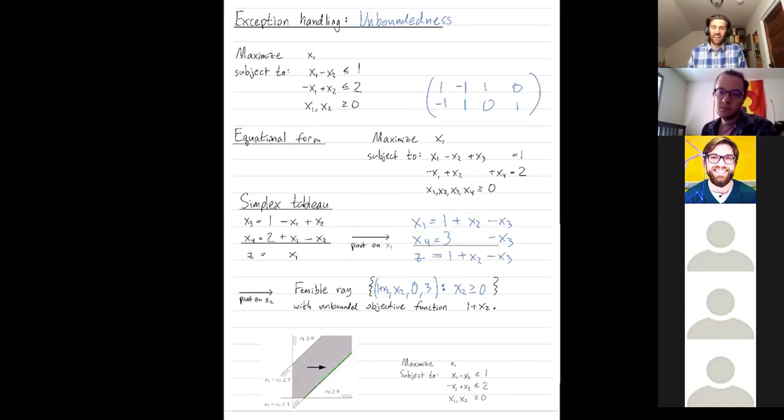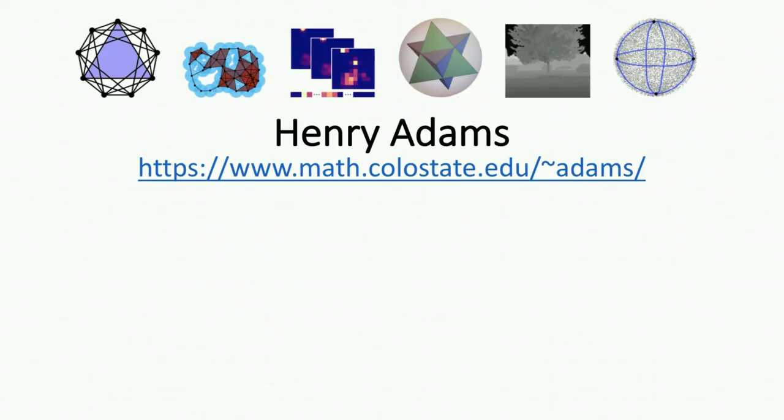Yeah, so this is something that I haven't fully made my own yet, I would say, right? I can clearly see how pivot on x1 moves us in this direction, and then pivoting on x2 moves us in that direction. You can see that that increases x2, but it's not quite the same as just going directly that way. Yeah, if someone has a better way of saying that, I'm all ears. I think there's more to be understood here than I've digested. Are there questions? All right, thanks.